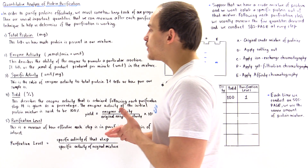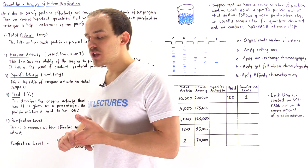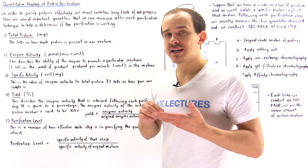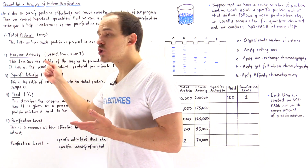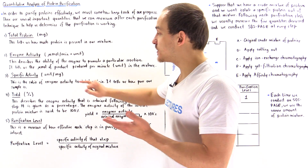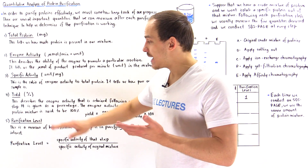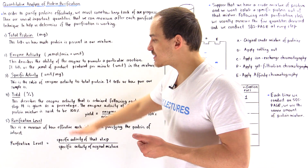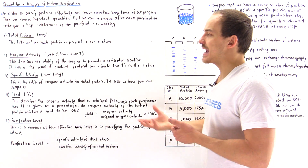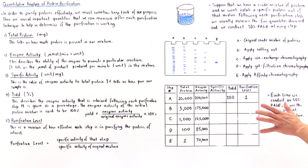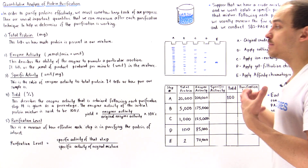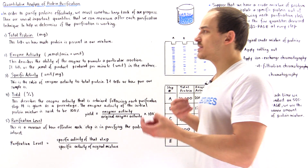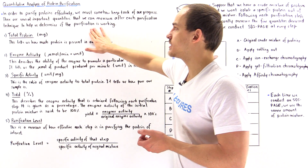In biochemistry, we develop five different types of quantities, and these five quantities can be measured following that purification procedure. We can compare those quantities to before, and they can tell us whether or not our procedure is actually working in purifying that protein mixture. The five quantities are: total protein, enzyme activity (also known as total activity), specific activity, yield, and purification levels.